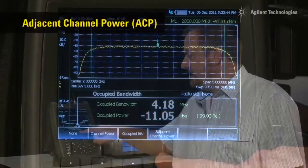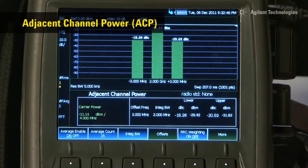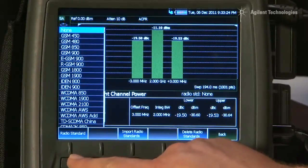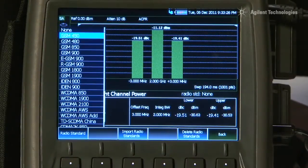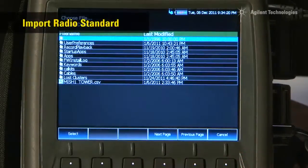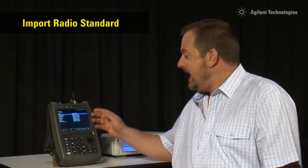We can even measure the adjacent channel power, and if we are working to a radio standard, such as in this case WCDMA, we can recall that standard, and the adjacent channel power measurement will automatically configure itself to measure adjacent channel power properly for that radio standard. You can even import your own radio standard. You just create them on your PC and then load them in on a USB memory stick.